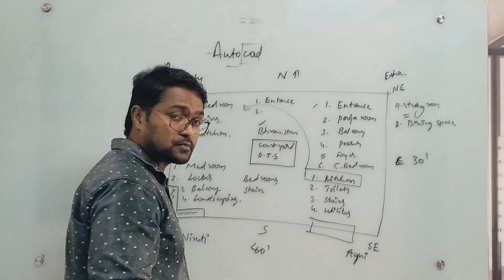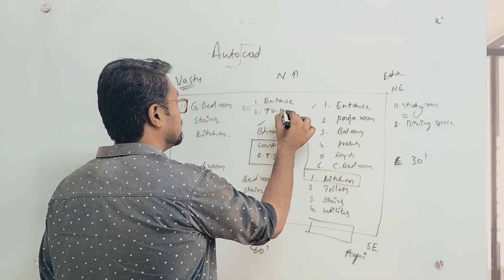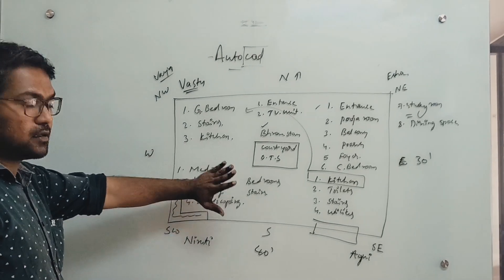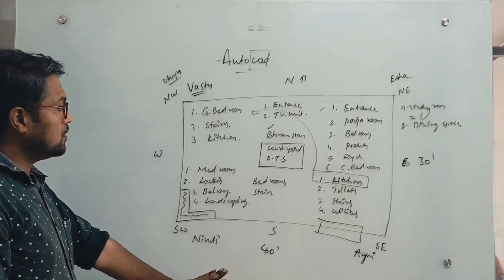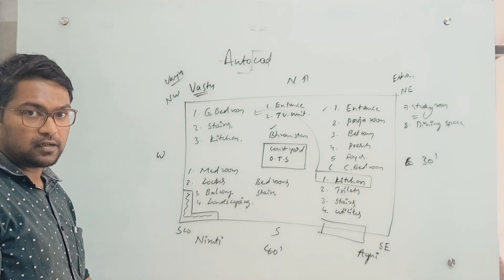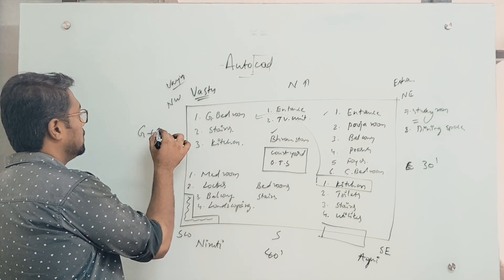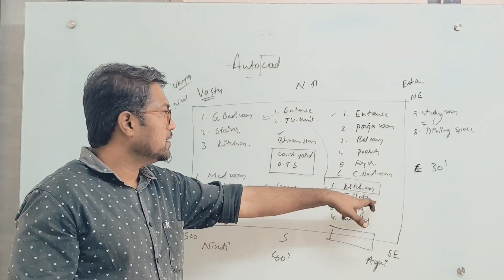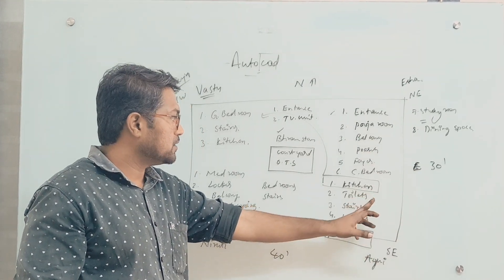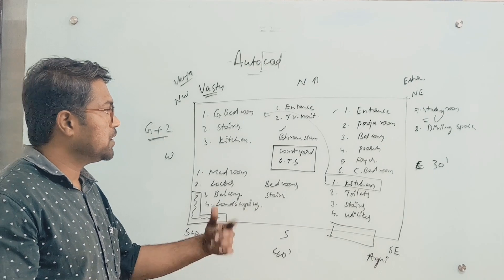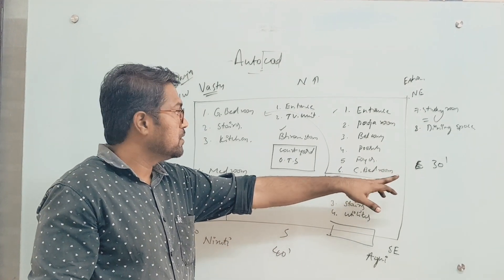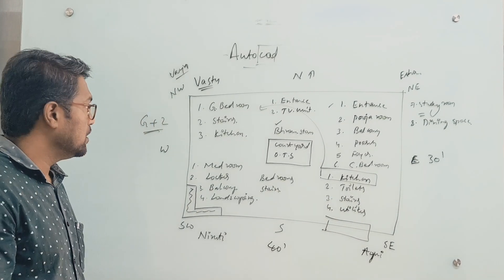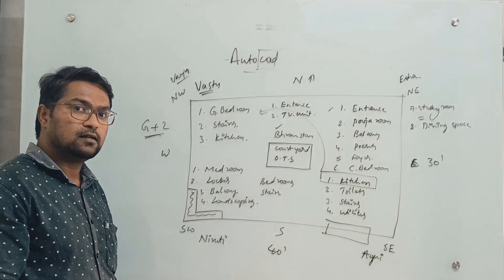In the exact north direction we can give entrance, and south direction second option is a TV unit. So this is my planning. If I want to plan for a 30x40 site of G+2 floors, in the ground floor I can provide entrance, puja room, dining space, kitchen, toilet, staircase, and utility. Coming to the first floor, I can go with children's bedroom, and if you want you can add a library or study space. Like this we need to create a plan.